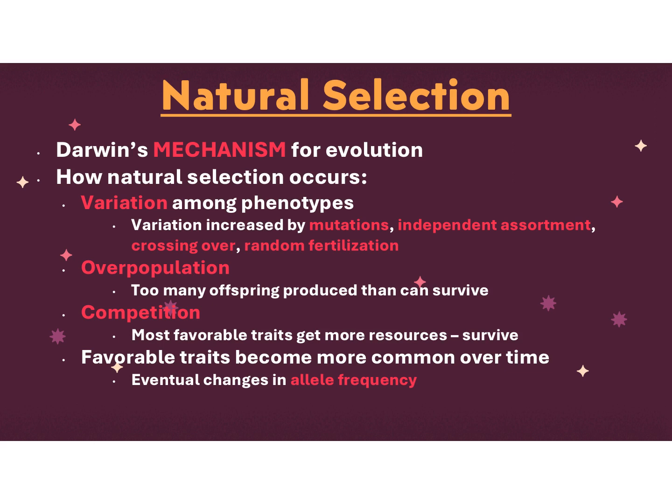In order for natural selection to occur, you must have the following. One is variation among the populations. You have to have different traits available — if everybody looks the same, there's not going to be any differential success. You're not going to have strongest and weakest. You can increase variation through mutations, independent assortment, crossing over, and random fertilization.